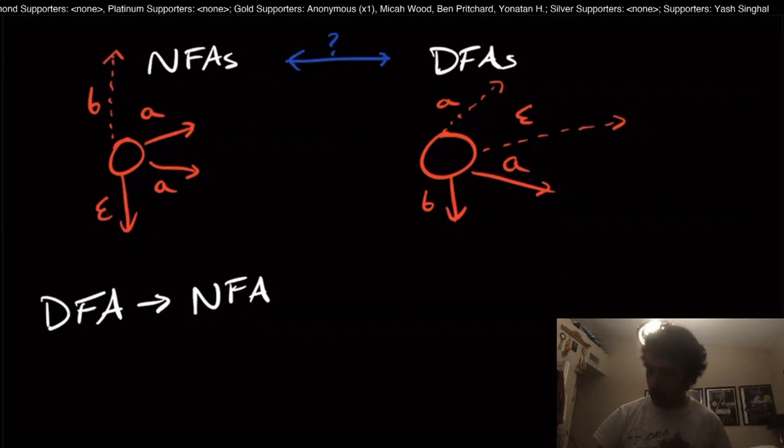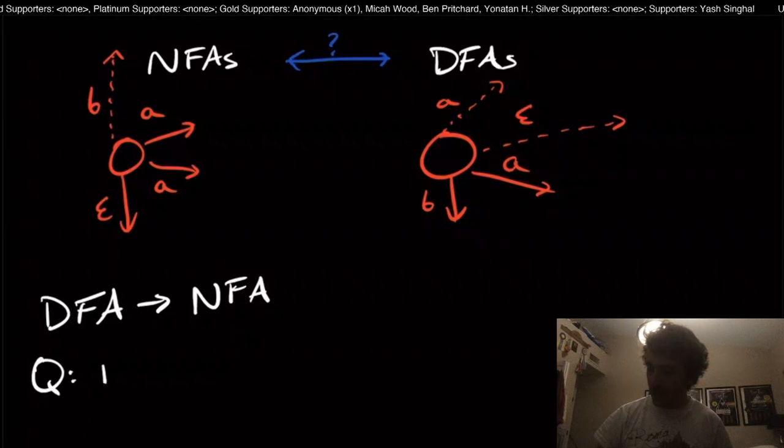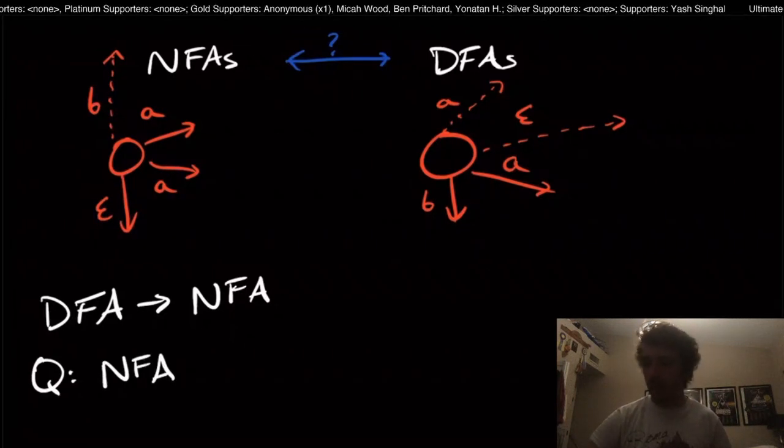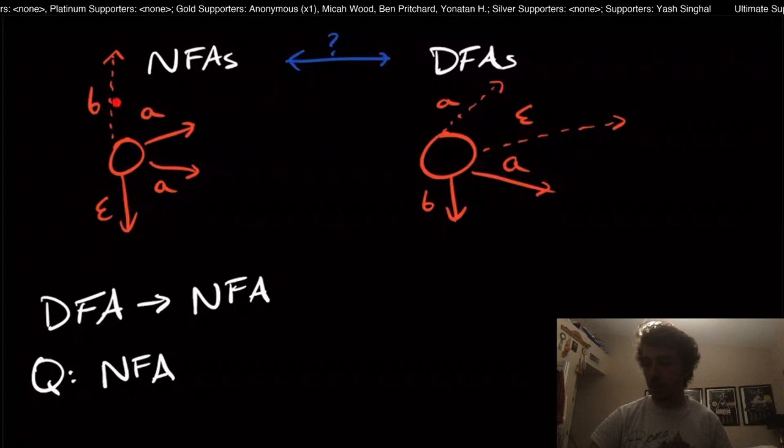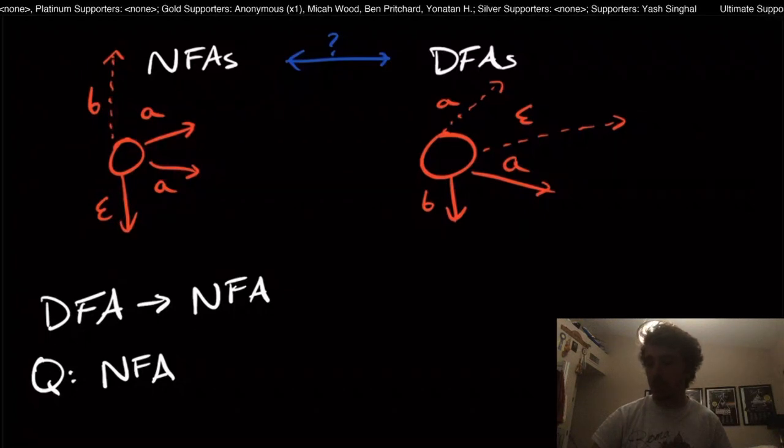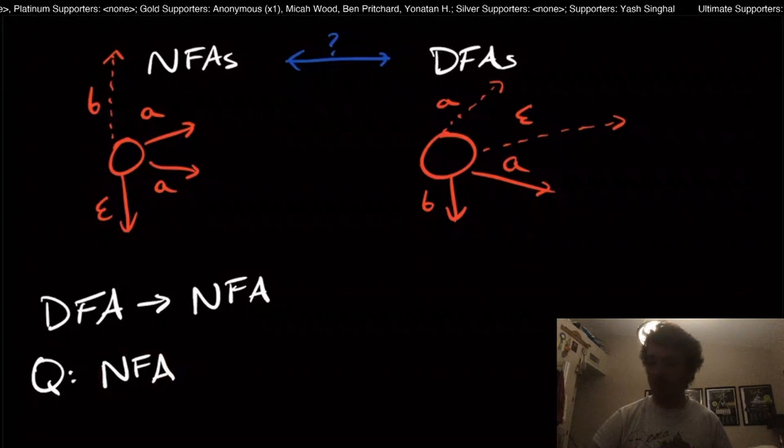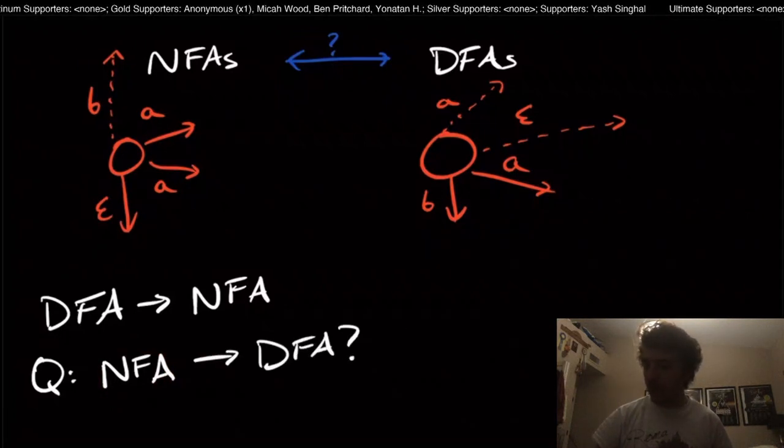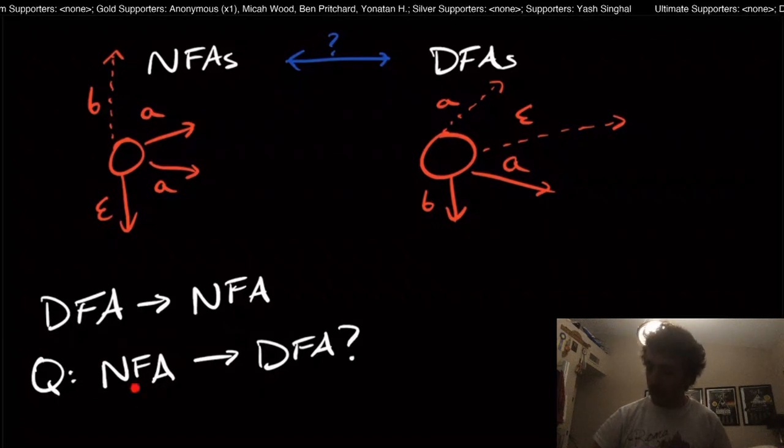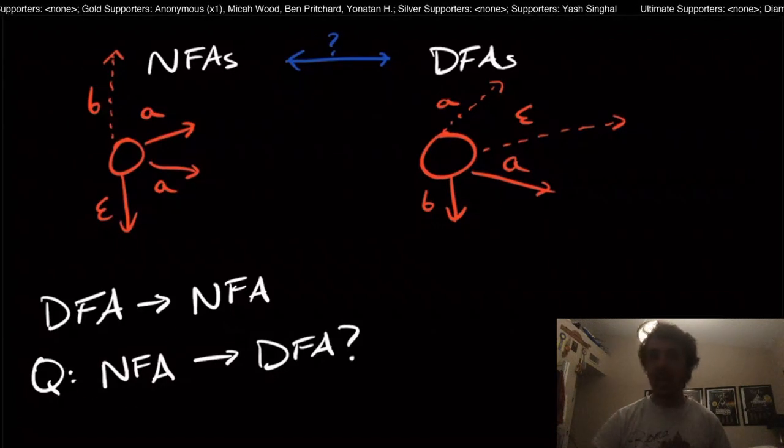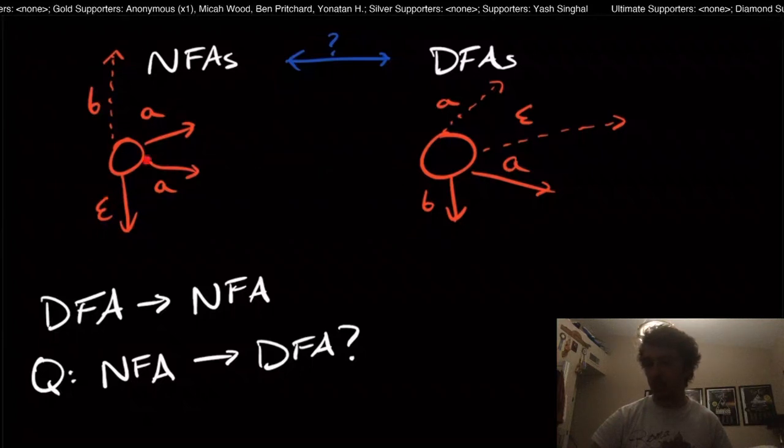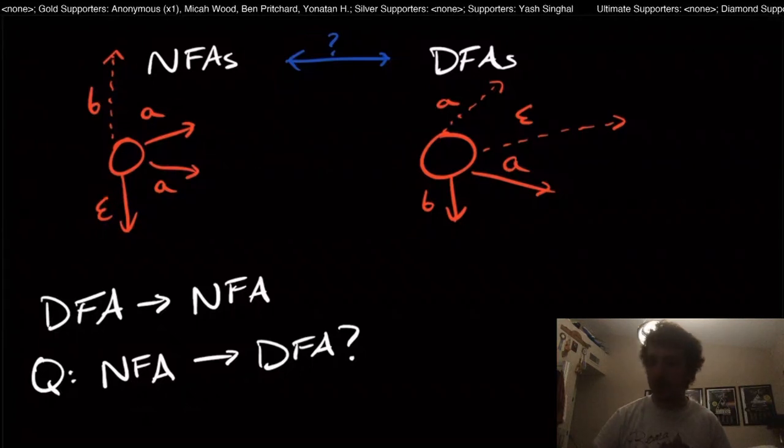So the question here is, can we get from an arbitrary NFA, which could have epsilon transitions, missing transitions, multiple transitions? Can we take such an NFA and convert it to an equivalent DFA? Well, I can't just take the machine and say, yeah, that's the DFA, because it may have epsilon transitions and multiple and missing transitions and all that stuff.